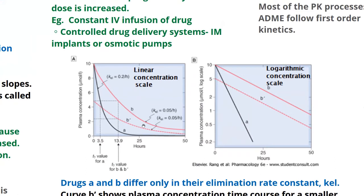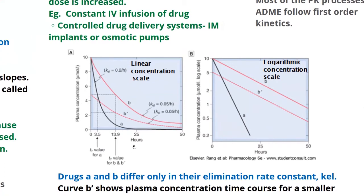Let us have a look at this graph of plasma concentration versus time. On the left is a linear concentration scale — 0, 2, 4, 6, 8, 10 — with equal spacing showing addition of two units. On the right is a logarithmic concentration scale — 0, 1, 10, 100 — where equal spacing represents multiplication by 10. We call the right-hand graph a semi-log graph because one axis is logarithmic and the other is linear.